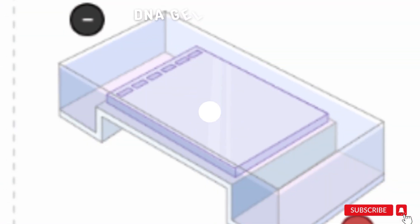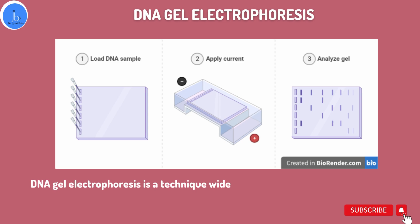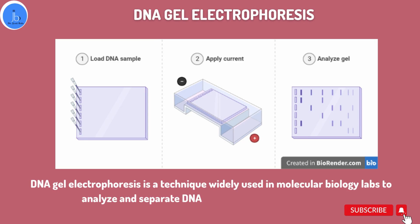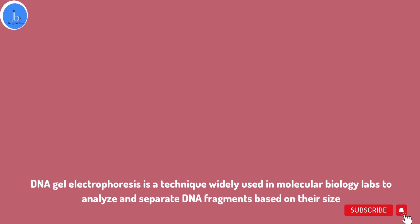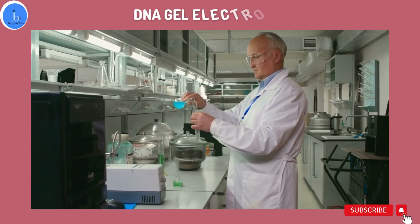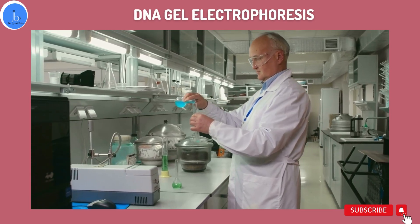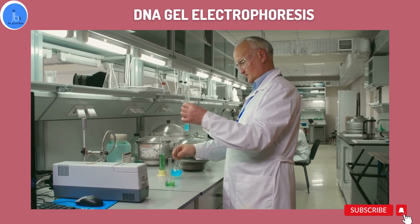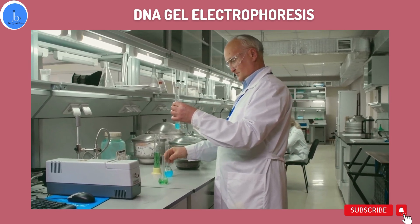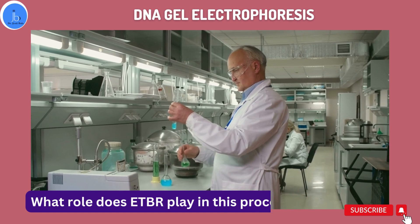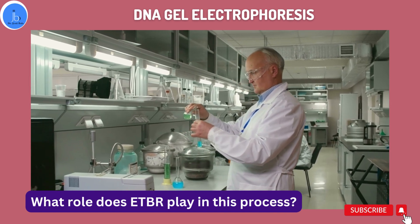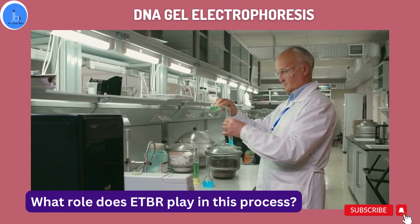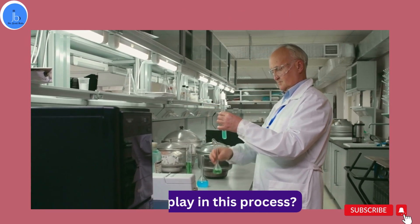As you know, DNA gel electrophoresis is a technique widely used in molecular biology and biotech labs to analyze and separate fragments based on their size. It has already revolutionized the field, allowing scientists and researchers to unlock the secrets hidden within the DNA molecule. But have you ever wondered what role EtBr plays in the process?